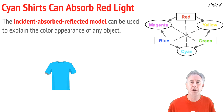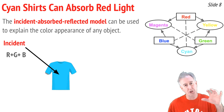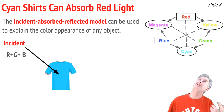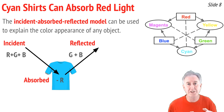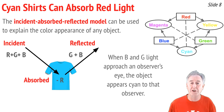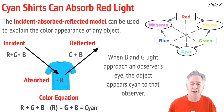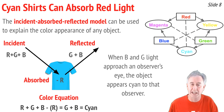Why does a cyan shirt look cyan? It begins with white light — R + G + B — hitting the shirt. A cyan shirt absorbs red light, so red gets taken away. What's left is blue and green, which reflects to the observer's eye, and the brain says you're wearing a cyan shirt. The color subtraction equation is: R + G + B − R = G + B = cyan.